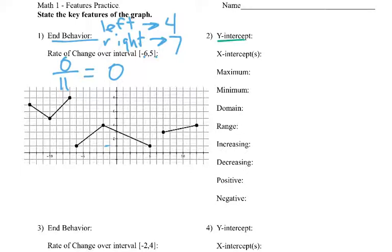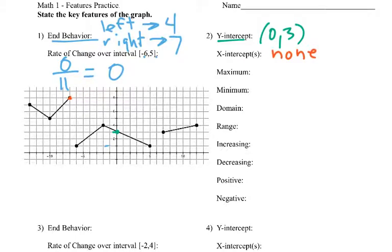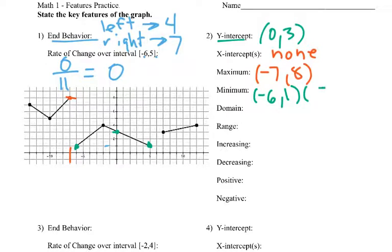Y-intercept — where's it crossed the y-axis? See it right there. We'll call that (0, 3). X-intercepts — does not cross the x-axis at all, so we have none. Maximum, my highest point, is right there. So that's negative 7, positive 8. My minimum, the lowest point, there's two of them. So that's (negative 6, 1) and (5, 1).